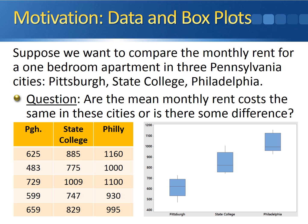We have 15 observations, five from each of the three cities. In Pittsburgh, the minimum rent was $483 with a maximum of $729. In State College, the rent costs ranged from $747 to $1,009. And in Philadelphia, the minimum was $930 and the maximum was $1,160. Looking at the box plots, we can clearly see that the observations in Pittsburgh are much lower than those in State College and Philadelphia. The observations in State College are less than those in Philadelphia, but there's a bit more overlap in the box plots than either of these two have with Pittsburgh.